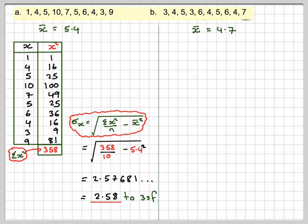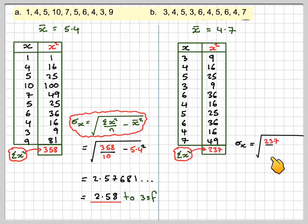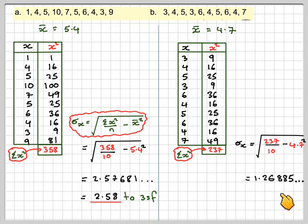Repeating for the other set of numbers — the mean was 4.7. You have to calculate the mean first, then square each of the numbers and sum the squares to get 237. Putting it in: √(237 / 10 − 4.7²) = 1.26885, which is 1.27 to 3 significant figures.